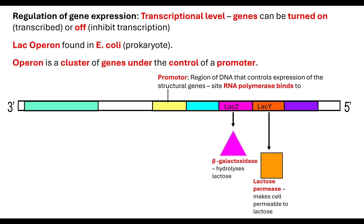We have lacY. The lacY gene results in the transcription and then translation of lactose permease. Lactose permease is a protein that's going to make the cell permeable to lactose. Lactose is a disaccharide — it's a large molecule — and it's not able to get across the phospholipid bilayer because it's too large. Therefore it needs a protein to make it more permeable.